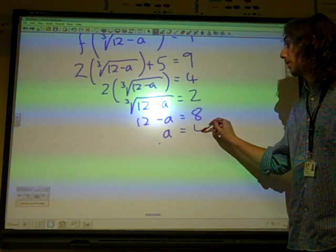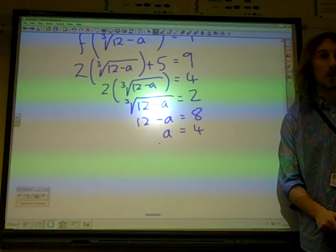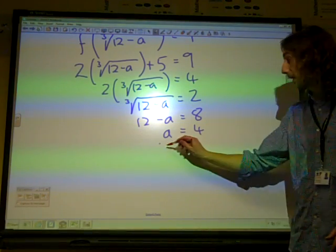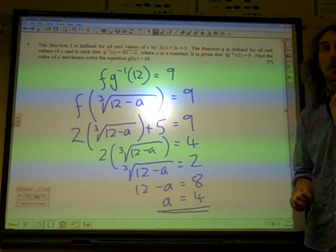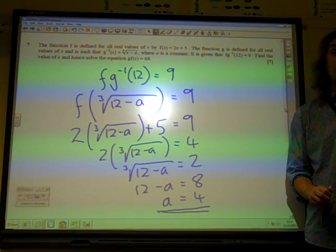And I think that means that a must be 4, doesn't it, if we rearrange that equation. So that's quite nice. So we've managed to get a = 4, by working our way through there. We've done the first bit, find the value of a.